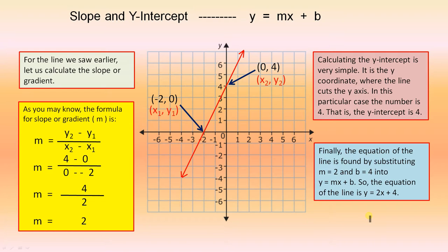Slope and y-intercept, y equals mx plus b. For the line we saw earlier, let us calculate the slope or the gradient. As you may know, the formula for slope or gradient represented by m is y2 minus y1 over x2 minus x1. That is, the difference of the y values over the difference of the x values.